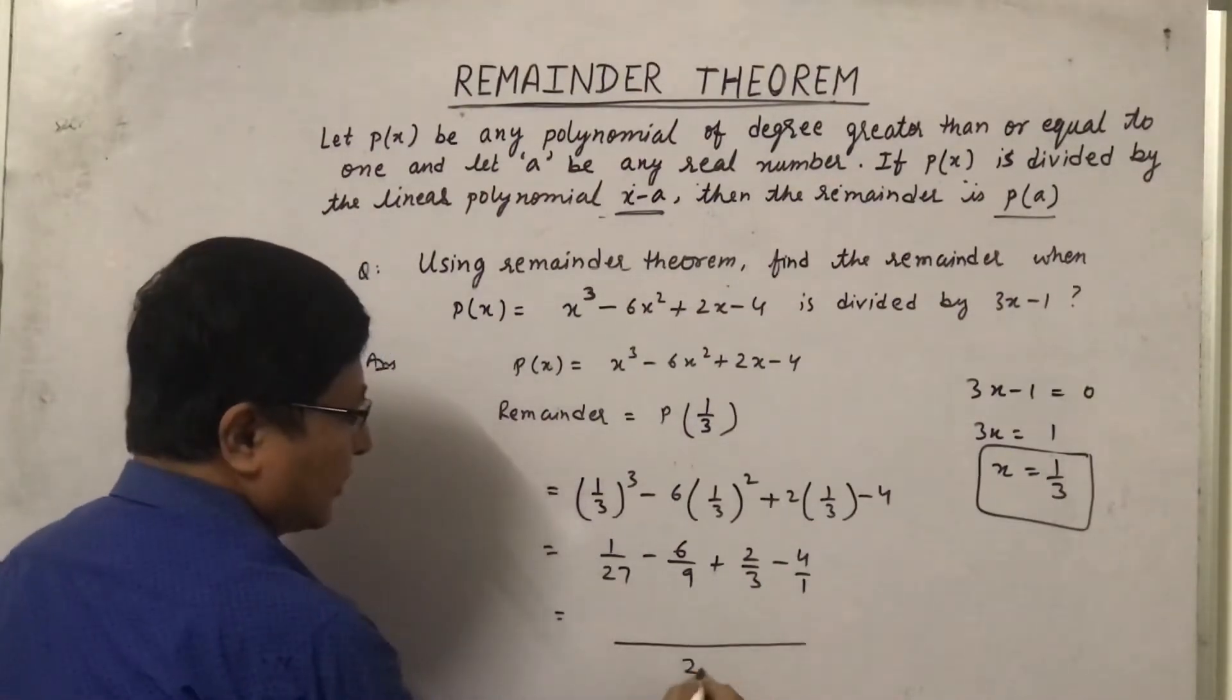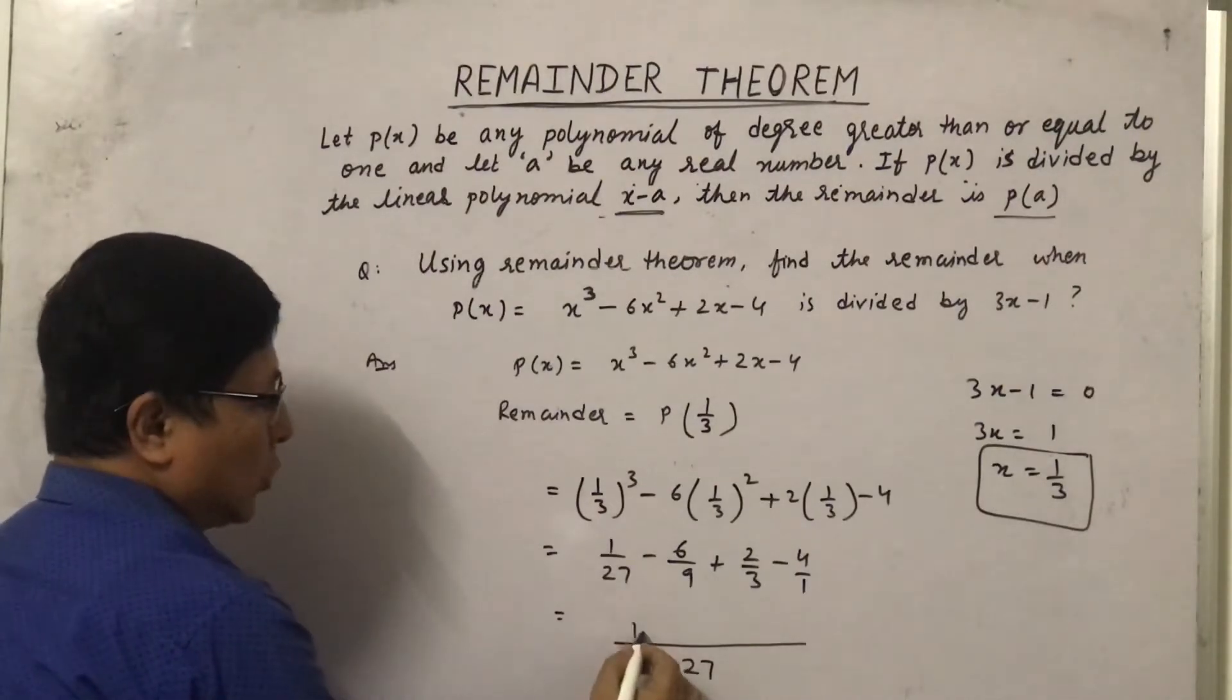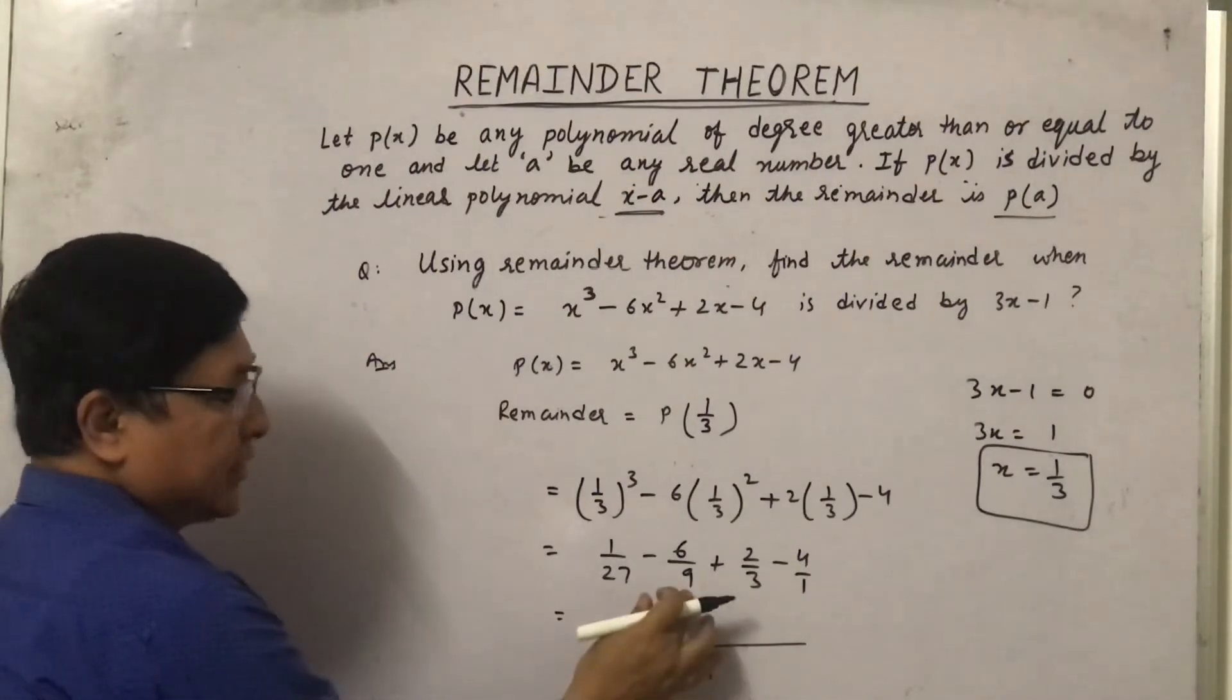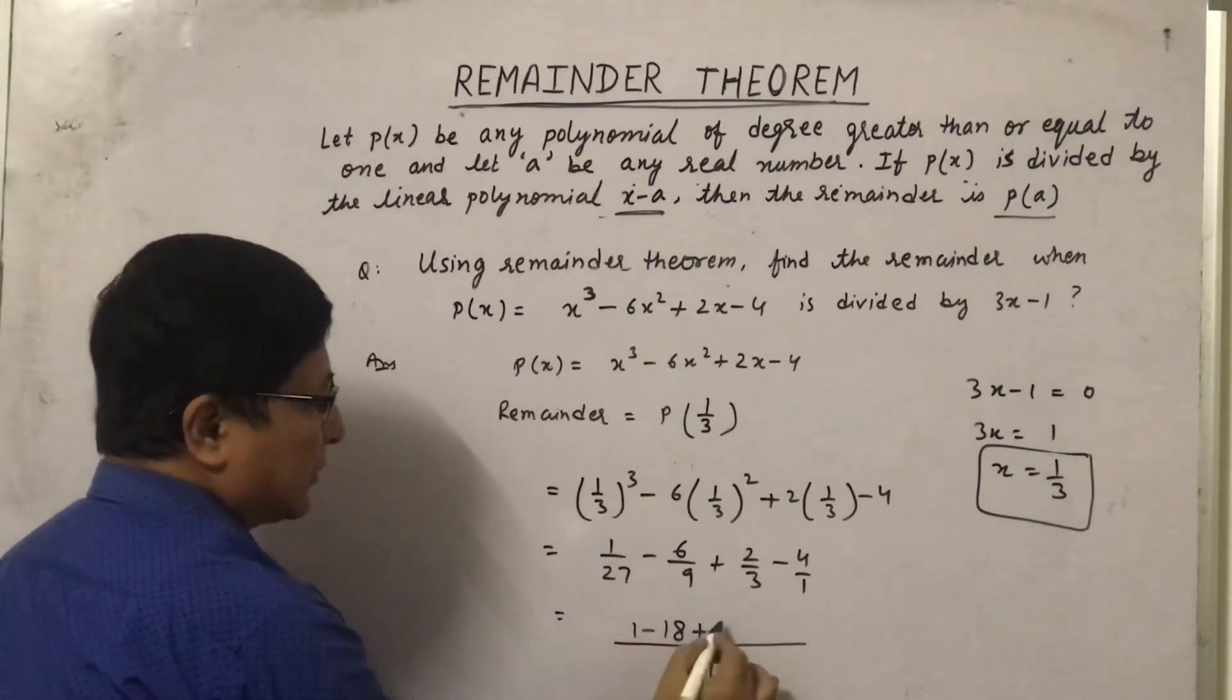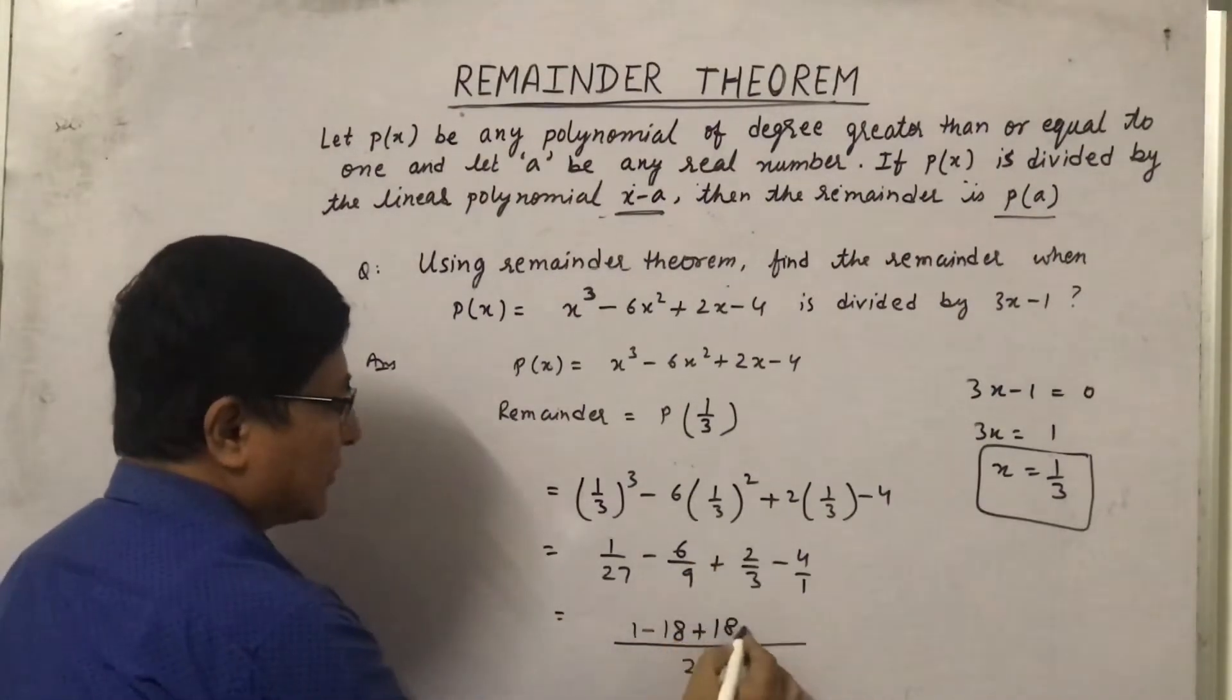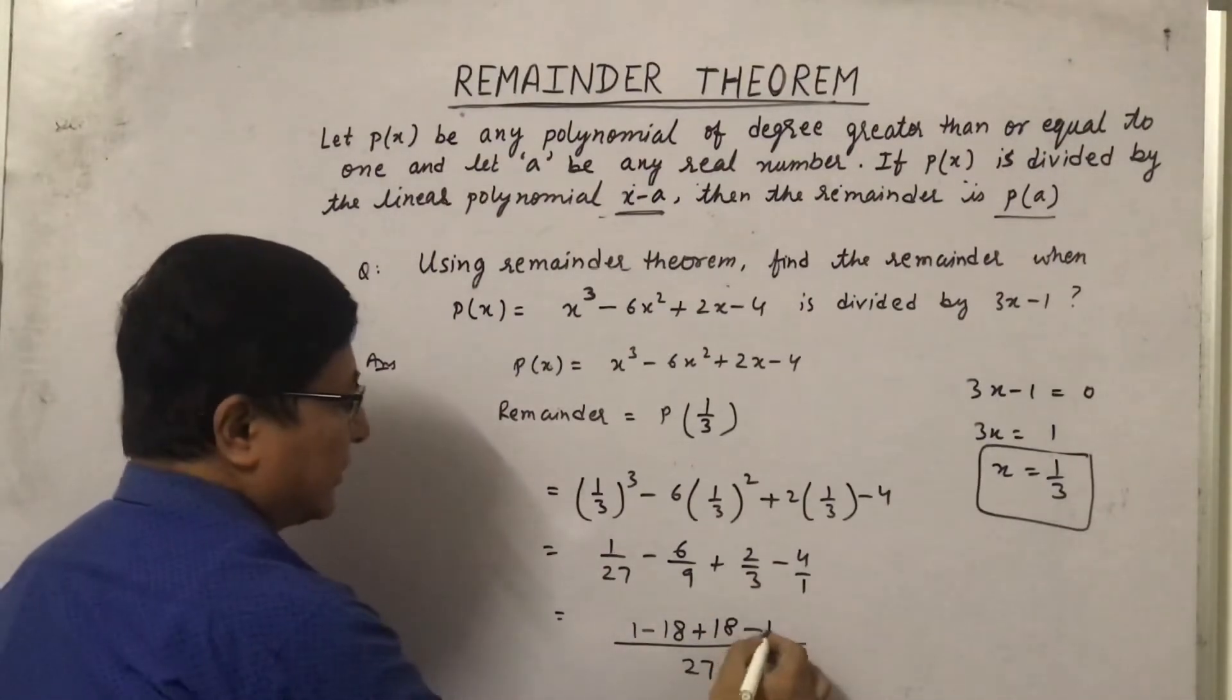Now let us check the LCM. The LCM will be 27. Here we will get 1 minus... 27 divided by 9 is 3, 3 times 6 is 18, then 27 divided by 3 is 9, so 9 times 2 is 18, and here 27 times 4 is 108.